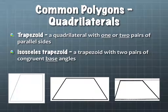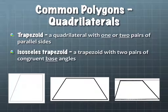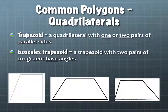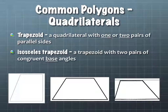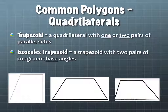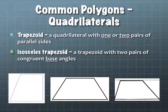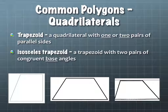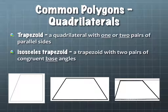Next, we're going to go on to quadrilaterals. The first one is a trapezoid. A trapezoid is a quadrilateral with one or two pairs of parallel sides, which is not the same definition in every textbook. Sometimes in particular curriculums, trapezoids will be defined as having one and only one pair of parallel sides.